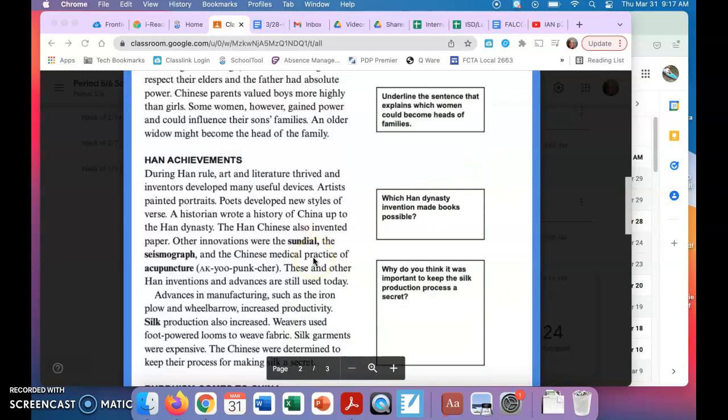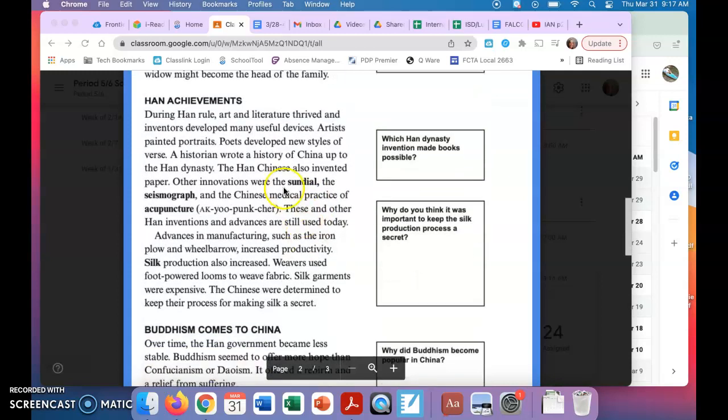Our next section is Han achievements. So the first question that you're going to look for is which Han Dynasty invention made books possible? During Han rule, art and literature thrived and inventors developed many useful devices. Artists painted portraits, poets developed new styles of verse, a historian wrote a history of China up to the Han Dynasty.